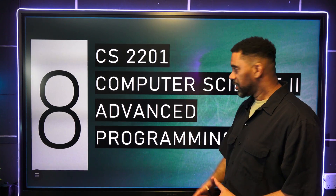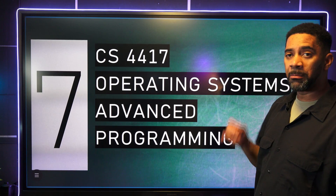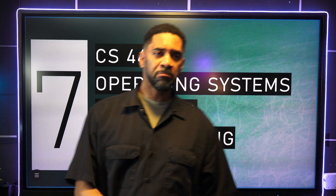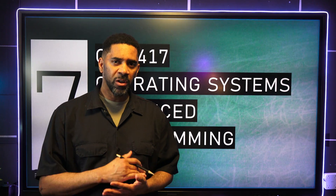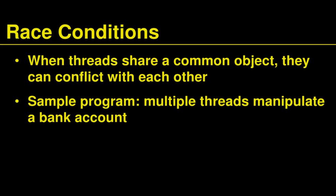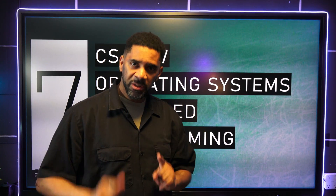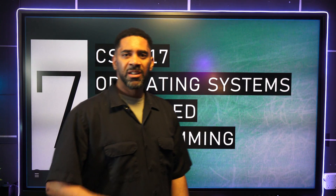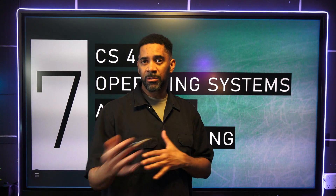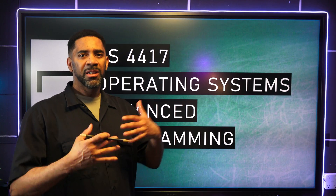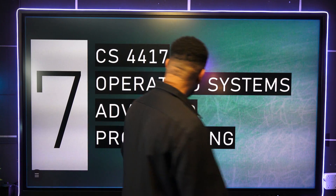Number seven is the advanced operating systems course. This course teaches how operating systems are designed and how they work. You'll learn about classical operating system problems like race conditions — important if you go into cybersecurity, since most hackers attack through the OS. You'll also learn about threads, processes, and memory management. It's actually pretty fun.